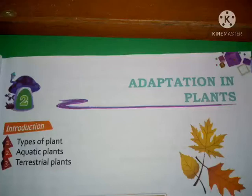Introduction. Number 1: Types of plants. Number 2: Aquatic plants. Number 3: Terrestrial plants. We are going to discuss these 3 topics in this chapter.